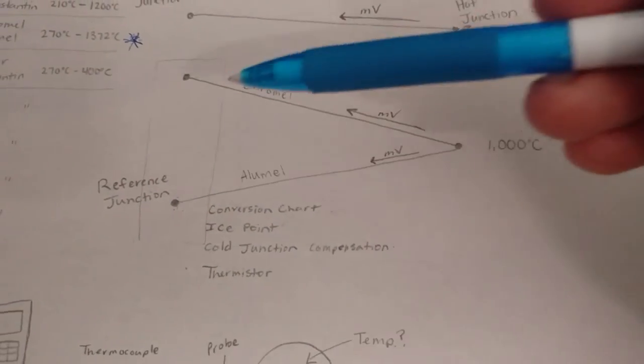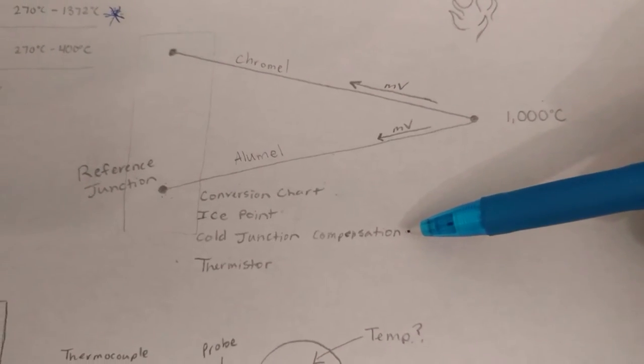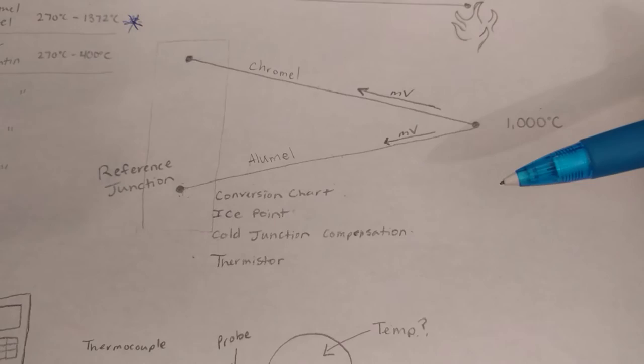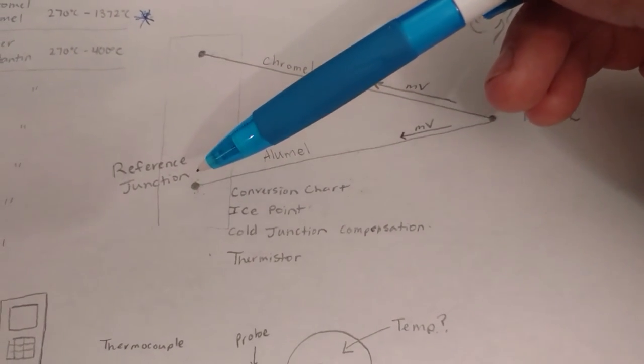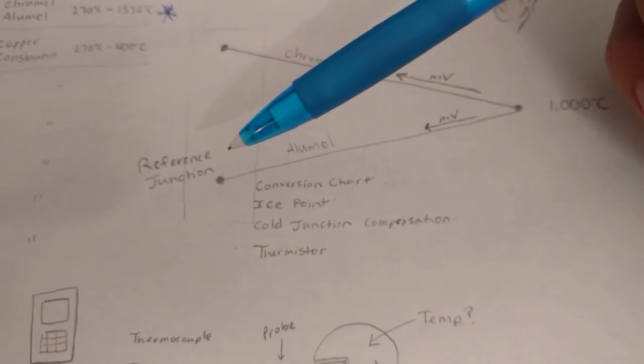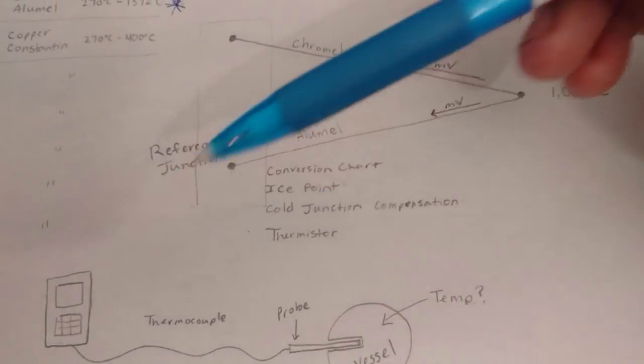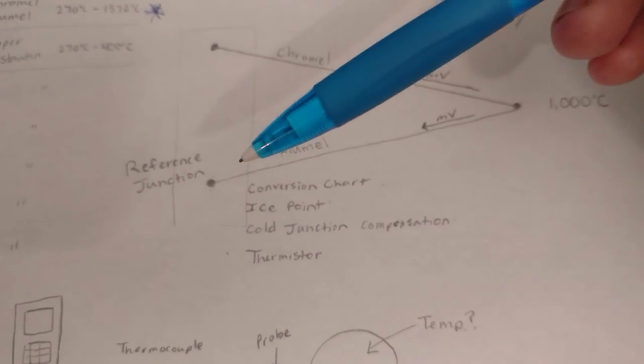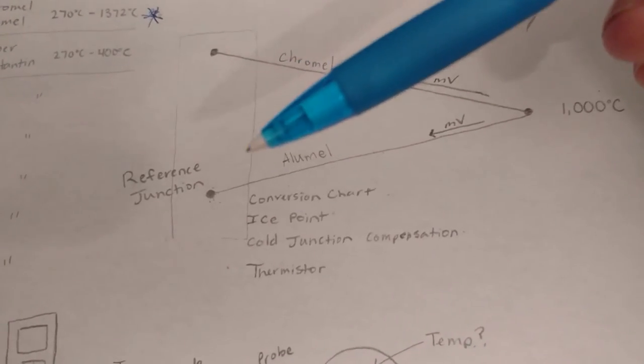Our machines do something called cold junction compensation where they find the temperature of whatever our reference point is - where this device is, the ambient temperature of the room. They find that temperature using a thermistor that's built into the machine. It does a cold junction compensation for us so we can find the accurate temperature.